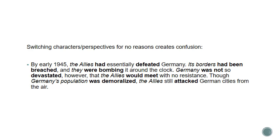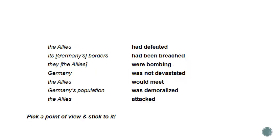What you don't want to do is switch characters and perspectives for no reason, because that creates confusion. If you're writing about the Allies, make sure the Allies are the subject of all the sentences; if writing about Germany, make sure Germany is the subject of all your sentences. Don't switch back and forth as in this example: 'By early 1945, the Allies had essentially defeated Germany. Its borders had been breached and they were bombing it around the clock. Germany was not so devastated, however, that the Allies would meet with no resistance. Though Germany's population was demoralized, the Allies still attacked German cities from the air.' Very confusing — all the characters and actions are switching around. So pick a point of view and stick to it in your writing.